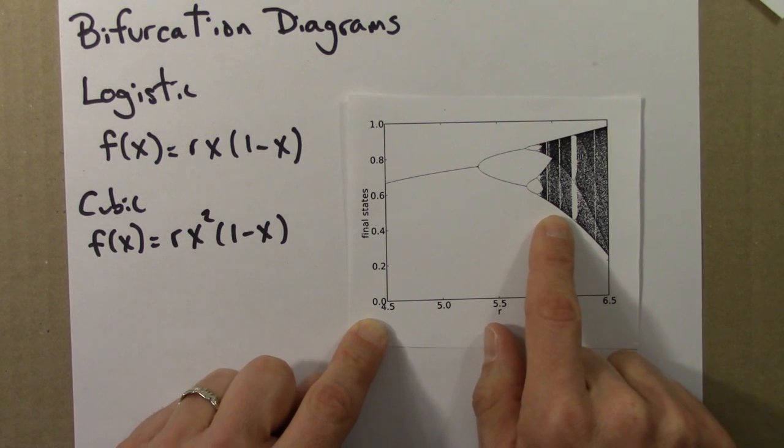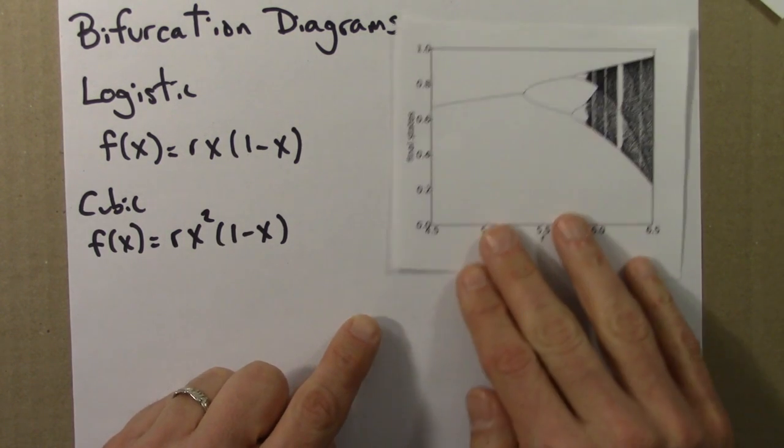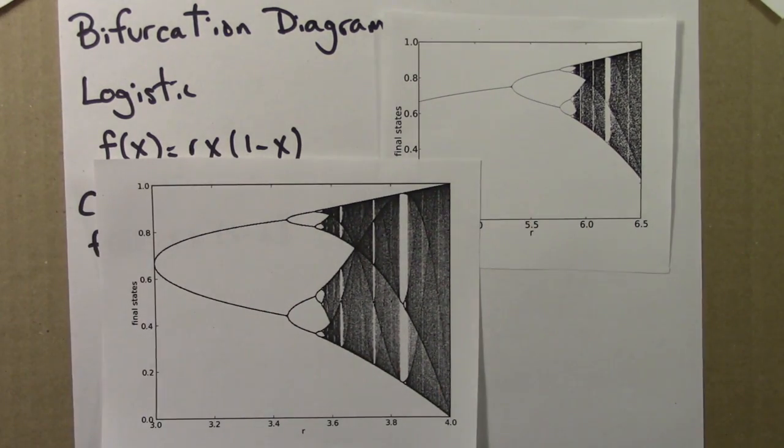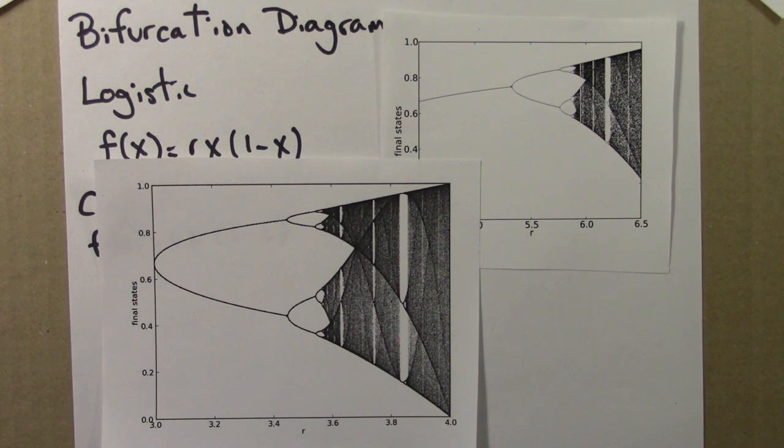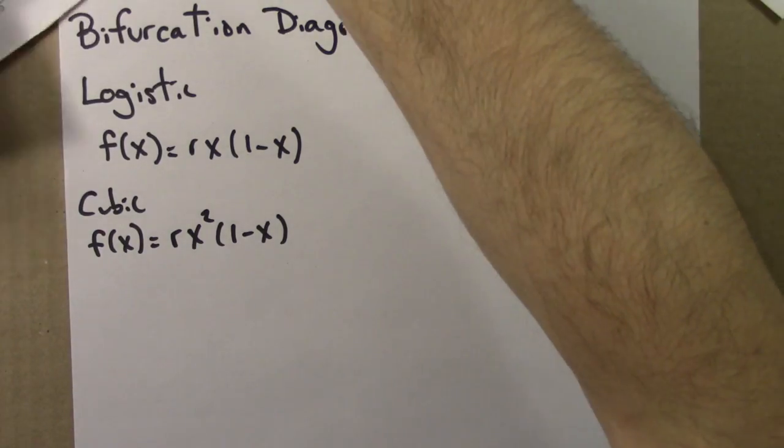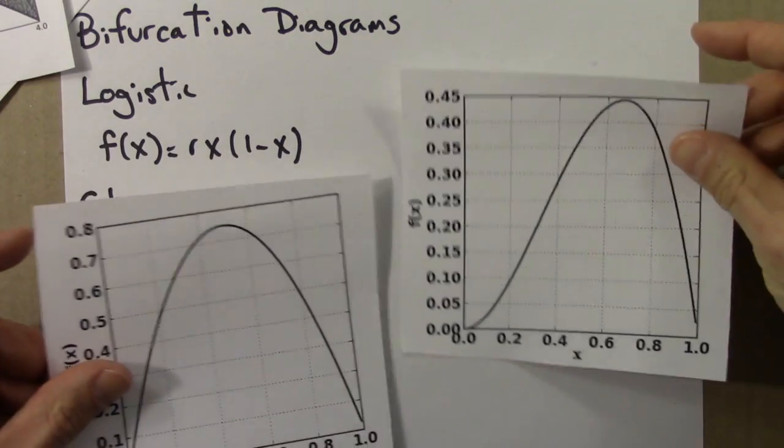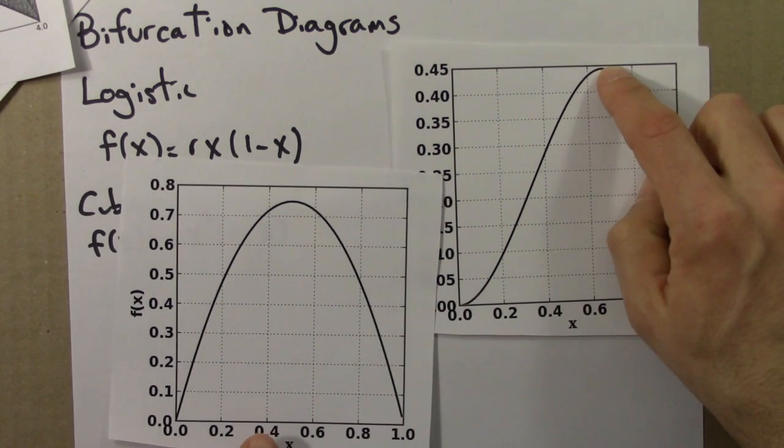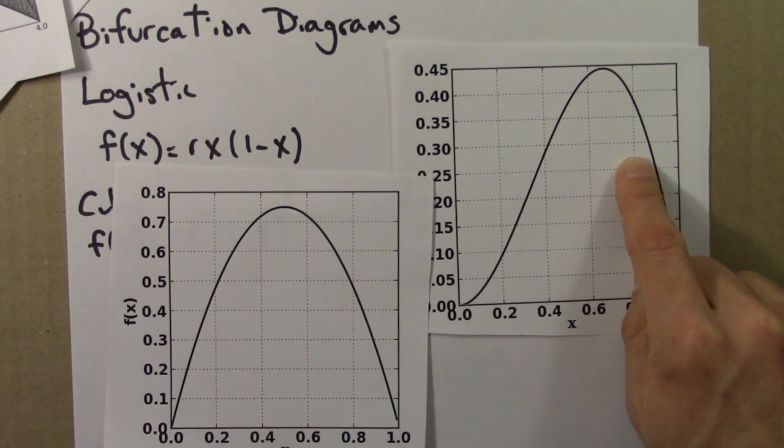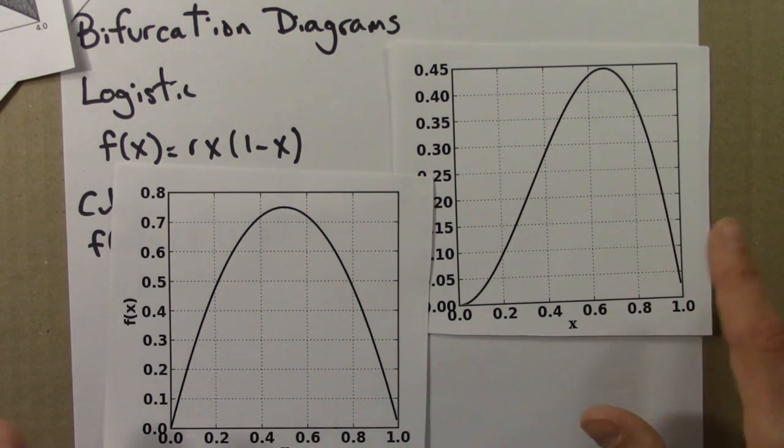Regions of aperiodic behavior interrupted by periodic windows. Very similar, not quite identical. They're shaped a little bit differently, but very similar bifurcation diagrams. And that's perhaps a little weird because the two functions, well, they both have a single peak and they're both smooth. But this one is asymmetric, this one is symmetric. So different looking functions are giving rise to very similar looking bifurcation diagrams.